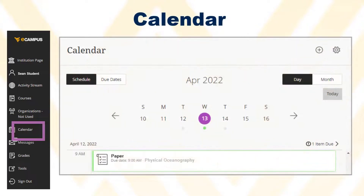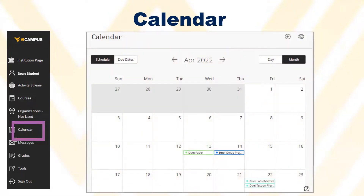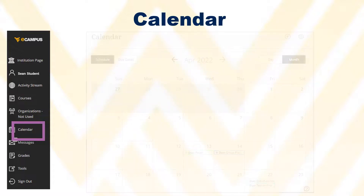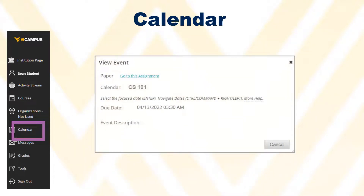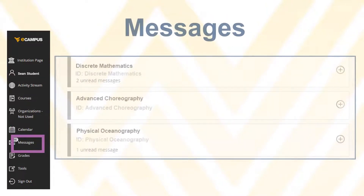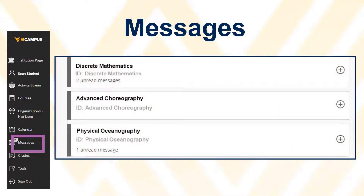The calendar shows due dates for items for all classes. You can view by the day or by the month. When clicking an item, you jump directly to the item within a course so that you can view instructions for an assignment and submit it or take a test. In the Messages area, you can click the link to view unread messages and click the plus sign to create a new message for that course.